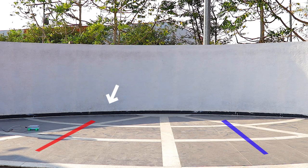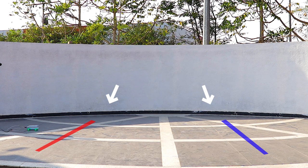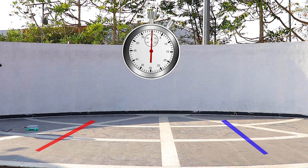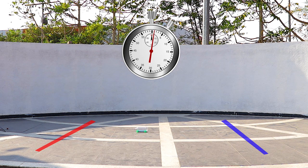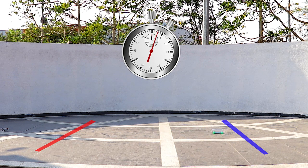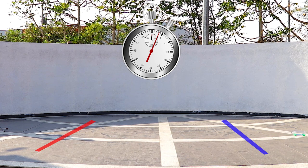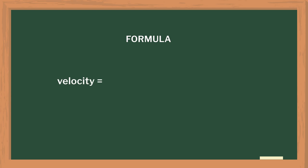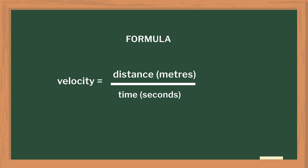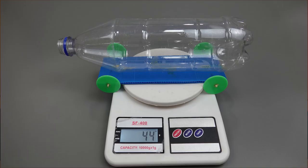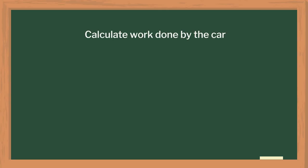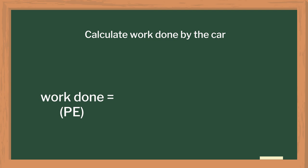Let us fix a starting point and an end point. Press start on the stopwatch as the bottle passes the starting point, and stop when it crosses the finish line. We will measure velocity as the distance divided by the time of the bottle jet. We then weigh the bottle jet and calculate its kinetic energy. Let us also calculate the work done by the bottle: mass times velocity times distance.